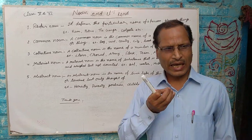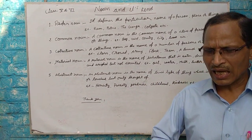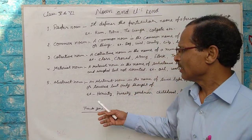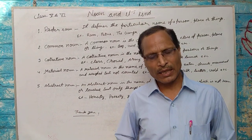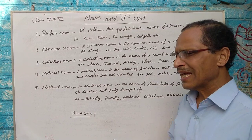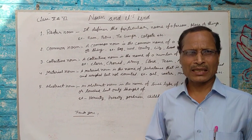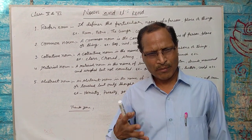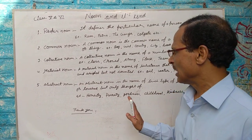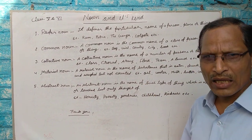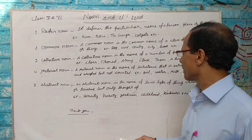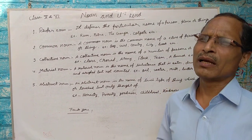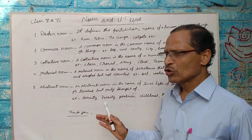जिस चीज़ का पता चलता है, जिसे हम खा सकते हैं, पी सकते हैं, माप सकते हैं, लेकिन गिन नहीं सकते, उसे हम material noun कहते हैं। Example: oil — oil को हम बाल सकते हैं; water — water को माप सकते हैं। We can also include milk, butter, and gold as examples of material noun.